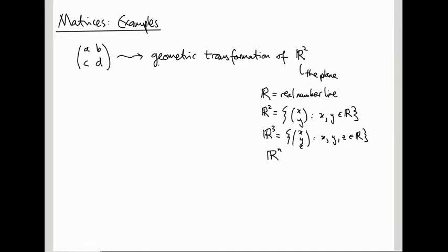So, what was this geometric transformation associated to this 2 by 2 array? It was the map that sent the vector X, Y to A, B, C, D applied to X, Y. Where, if you remember, this was defined to be AX plus BY, CX plus DY. So, you should think of this 2 by 2 matrix as just four numbers that encode a geometric transformation. In the same way, these two numbers X and Y encode a position in two-dimensional space. These four numbers are encoding a transformation. So, you should think of a matrix as like a numerical representation of a transformation of the plane.